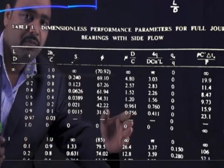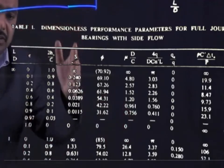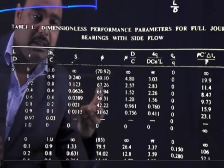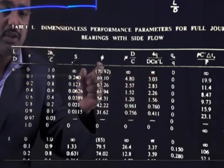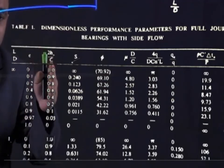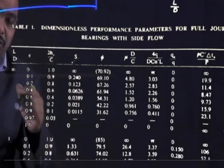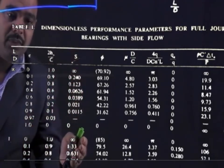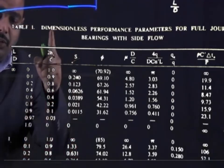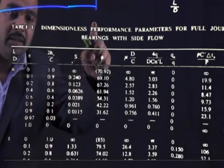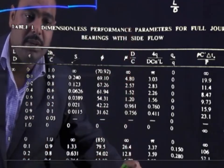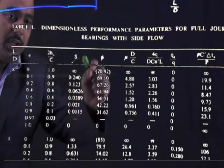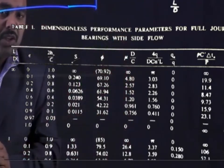Select the S value from that column and also take the parameter 2H naught by C from the table. For example, if L/D is 1.33, select the corresponding values. From S and 2H₀/C, you can then determine D/C. After writing all this, you can calculate N dash into D/C correctly.